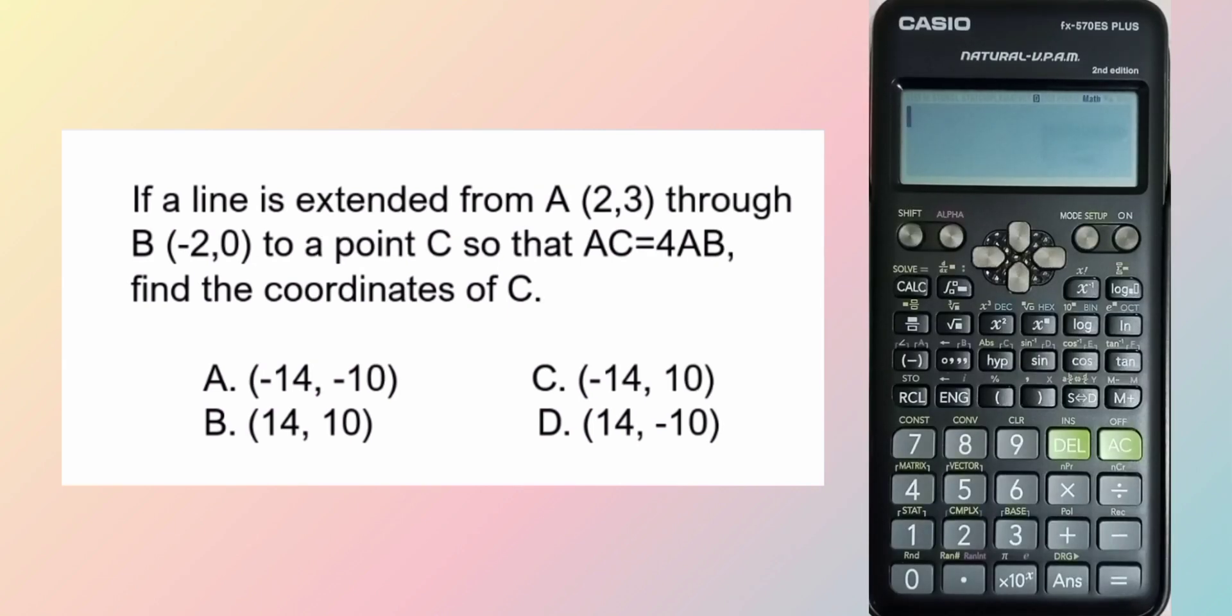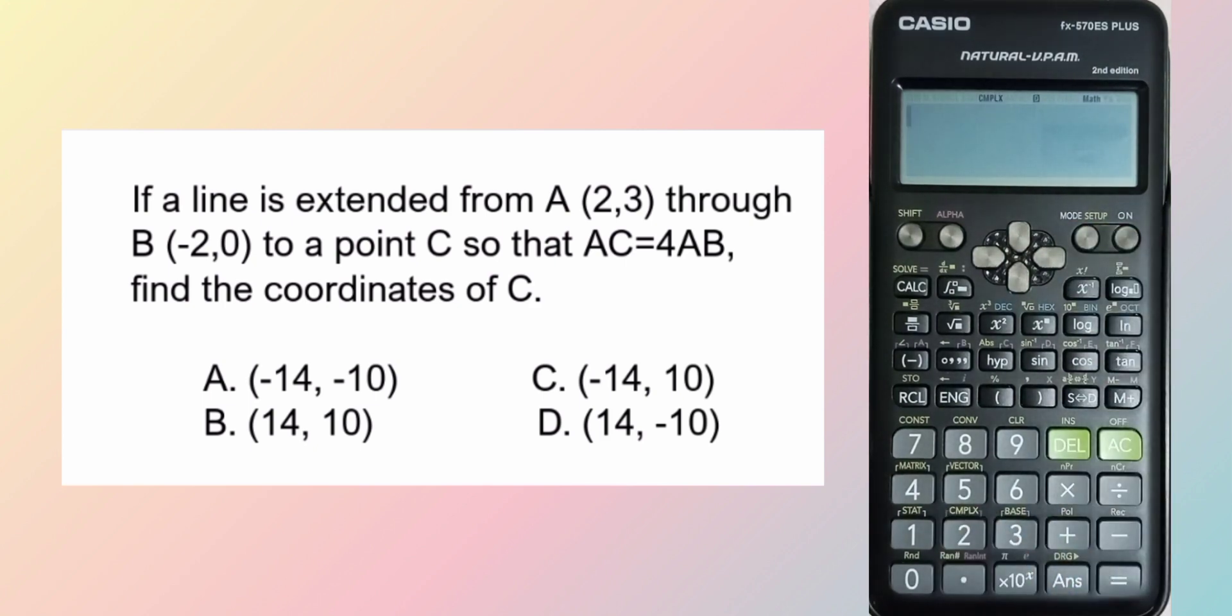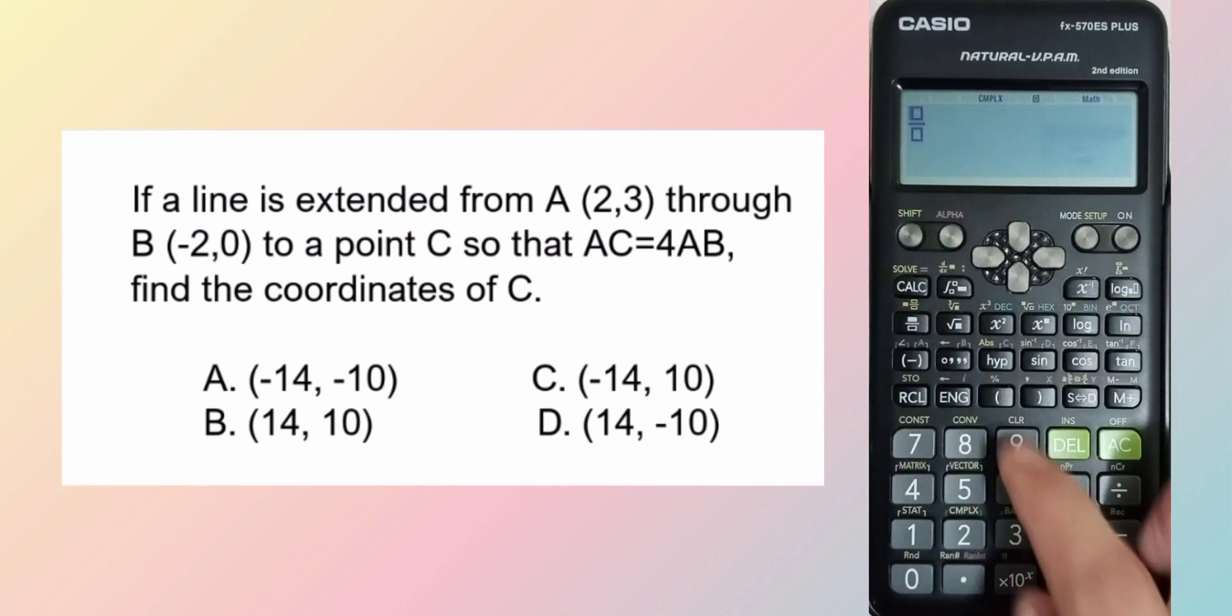Since we are to compute for distance or the length, mode to complex mode for dial. In the given condition, AC is equal to 4AB, which is also equal to AC over AB is equal to 4.